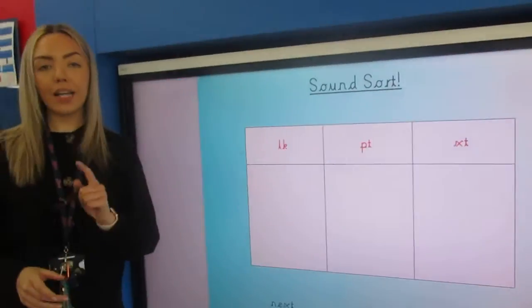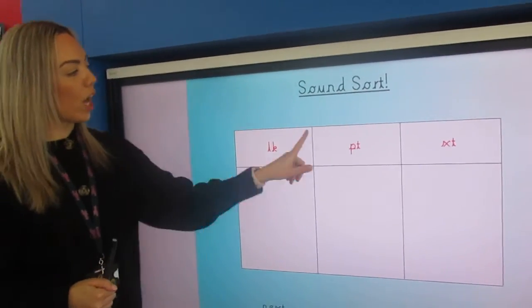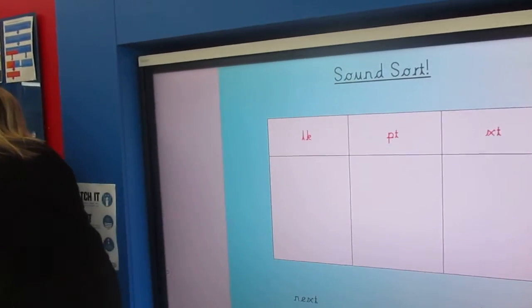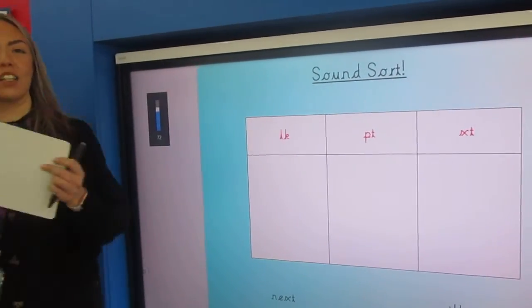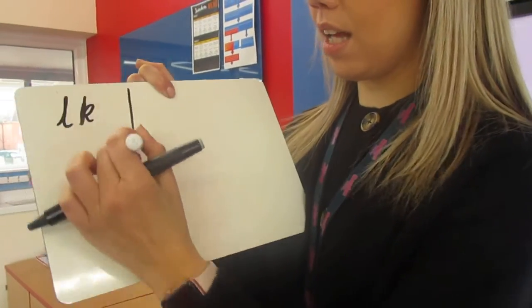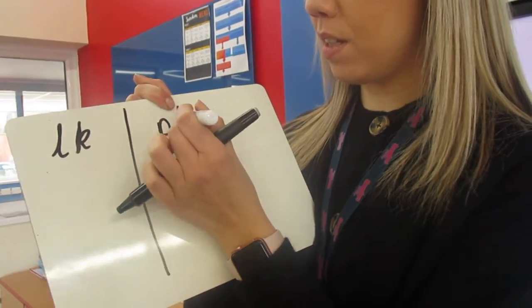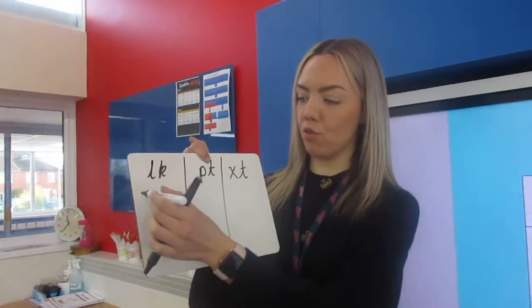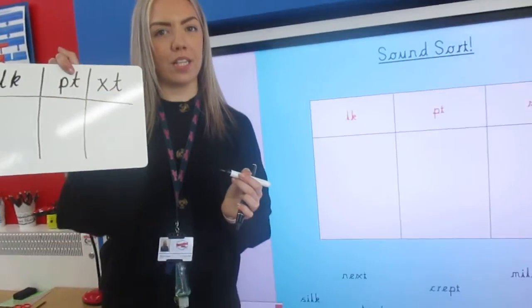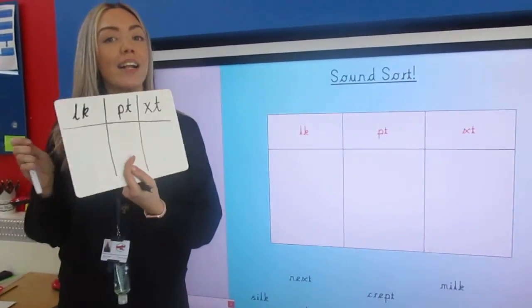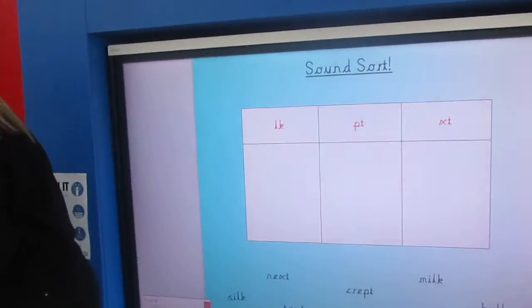So we're going to sort them but before we do that I would like you to grab your whiteboard and your pen and you're going to draw your own table. Now it doesn't need to be as fancy as Miss James's. It can look like this: uck, a line, pt, a line, xt. And you can draw a line there and you can put your words underneath. Then I know that you're also practising writing those sounds that we've learnt so far this week.